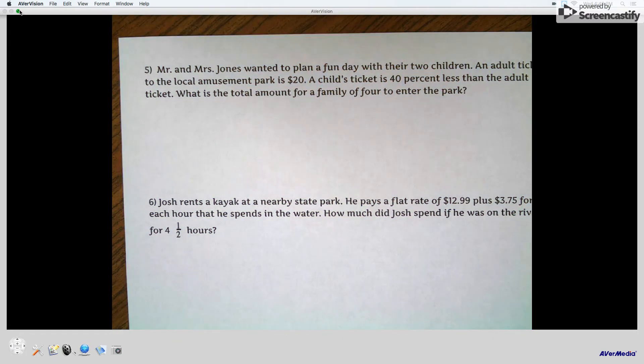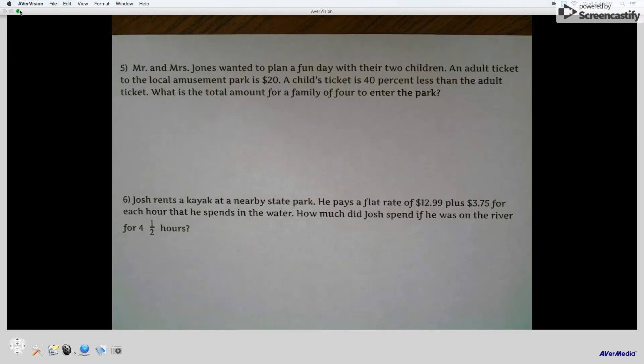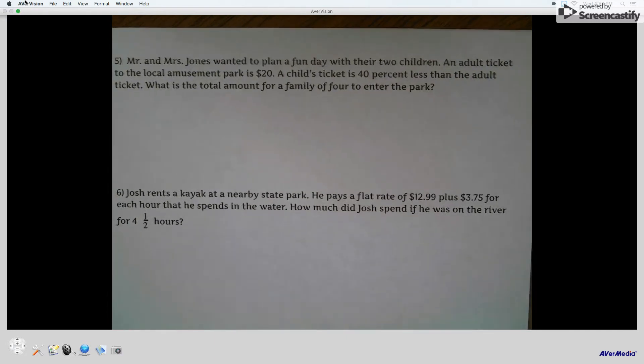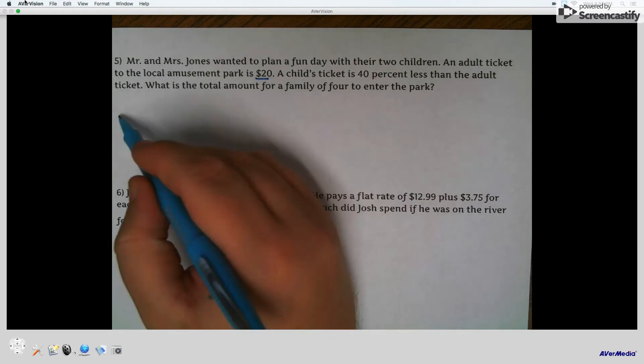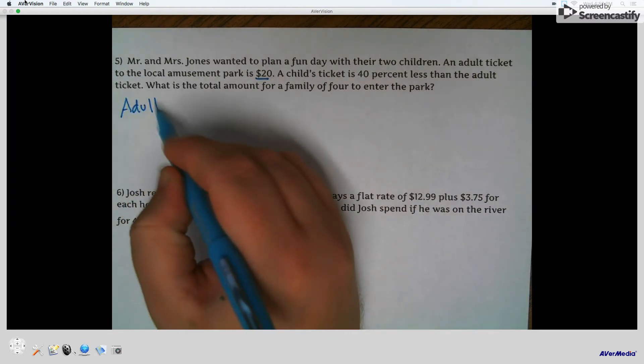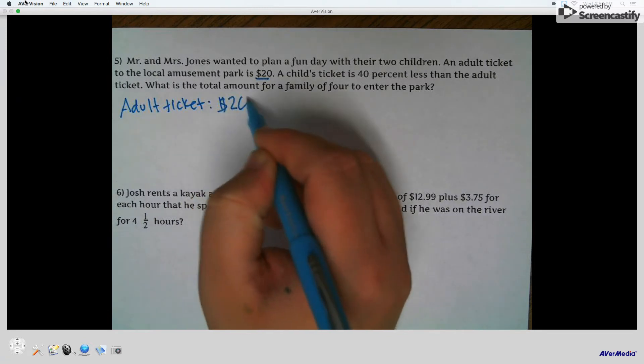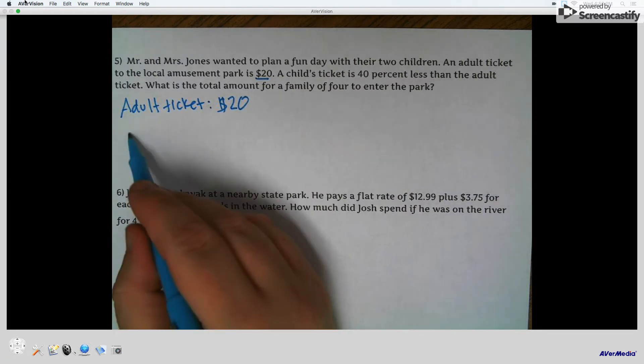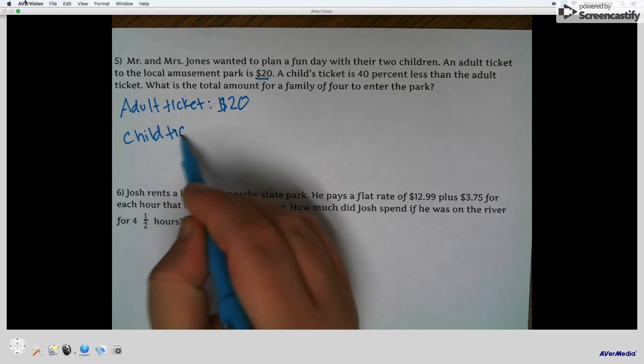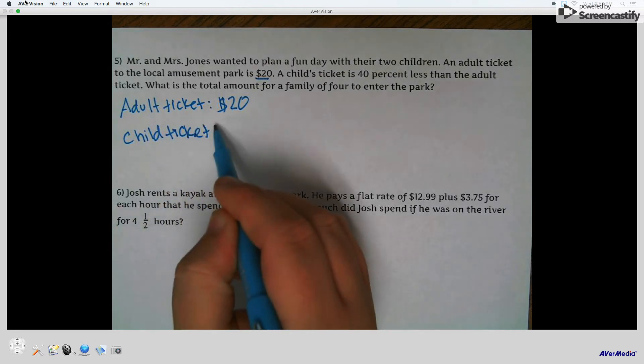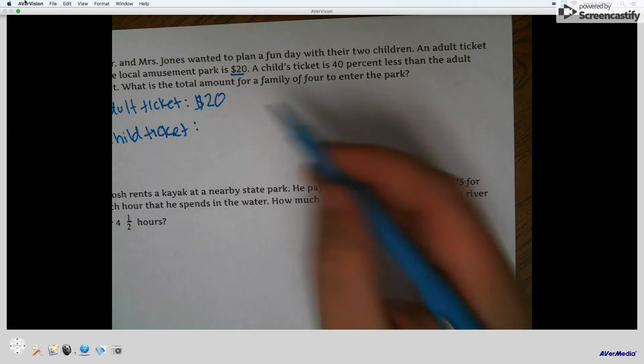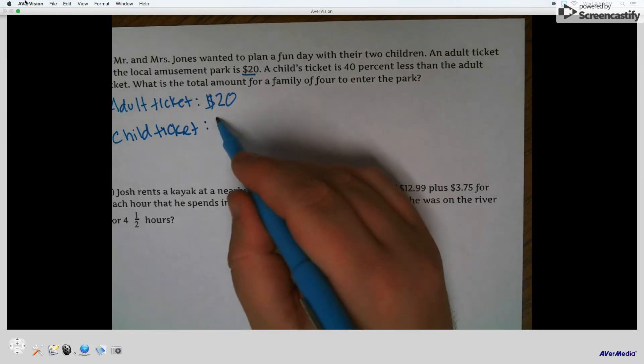All right. Question number five says that Mr. and Mrs. Jones wanted to plan a fun day with their two children. An adult ticket to the local amusement park is $20. So I'm going to write adult ticket. Okay, where are they getting these prices? Kings Dominion is very expensive. And a child's ticket is 40% less than the adult ticket. So 40% less.